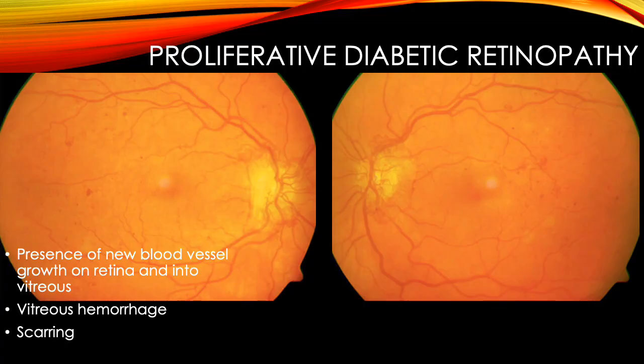Here we see proliferative blood vessels especially near the optic nerves. There's also an abundance of microaneurysms. As mentioned, there may also be vitreous hemorrhages, scar tissue, and retinal detachments, which are not seen in these photos.